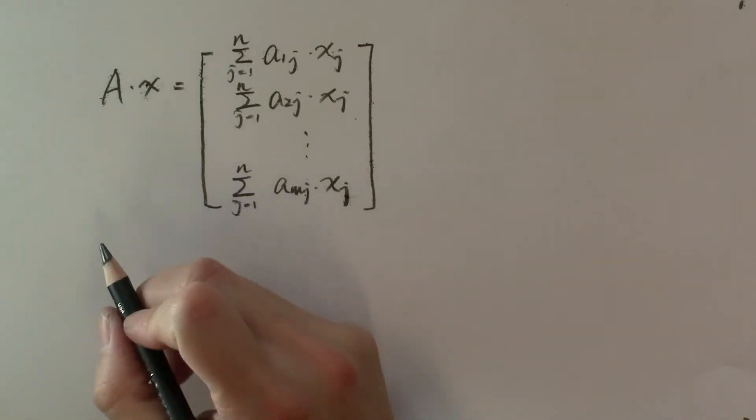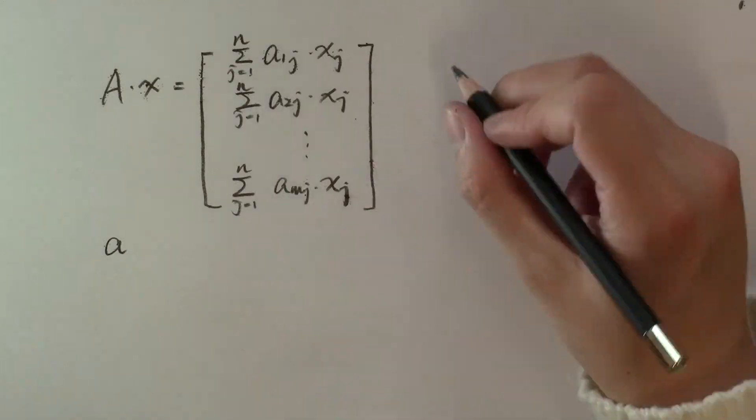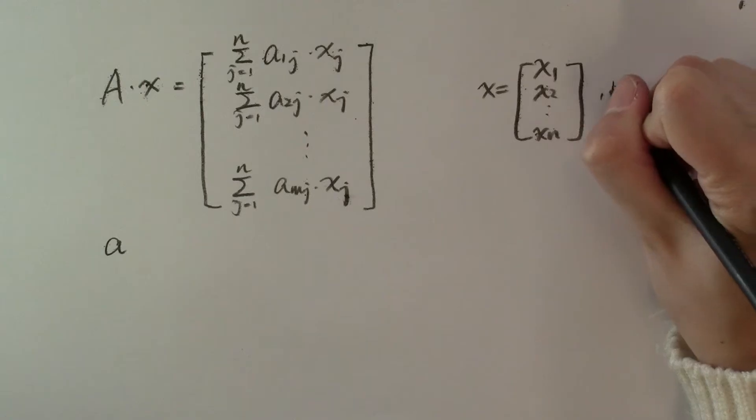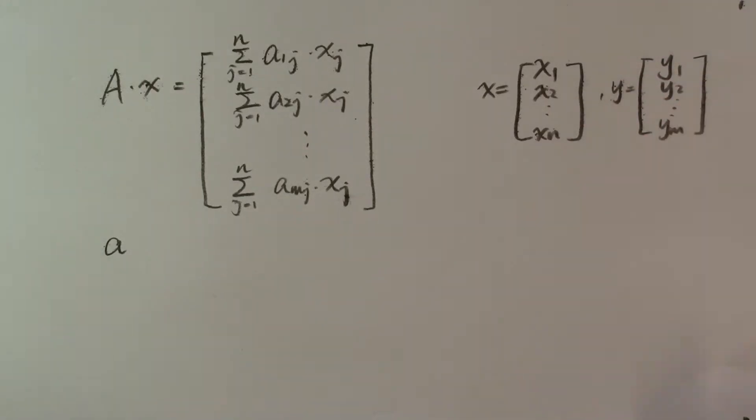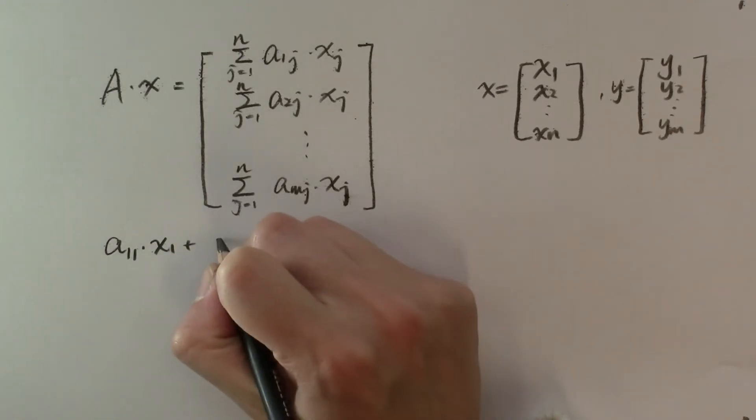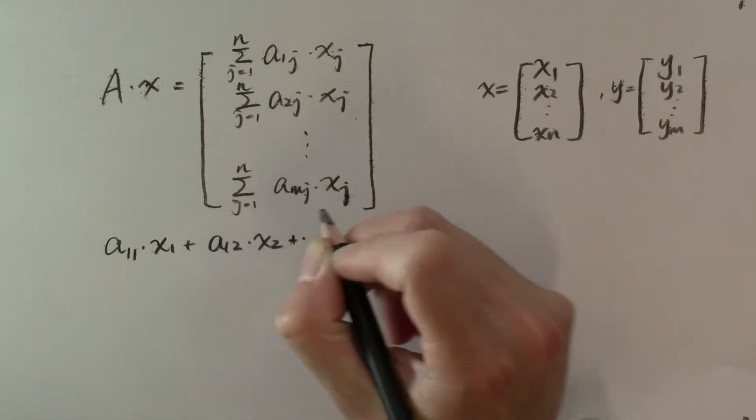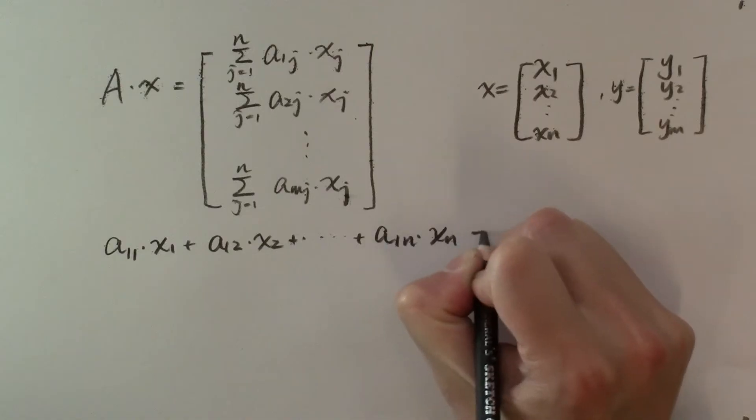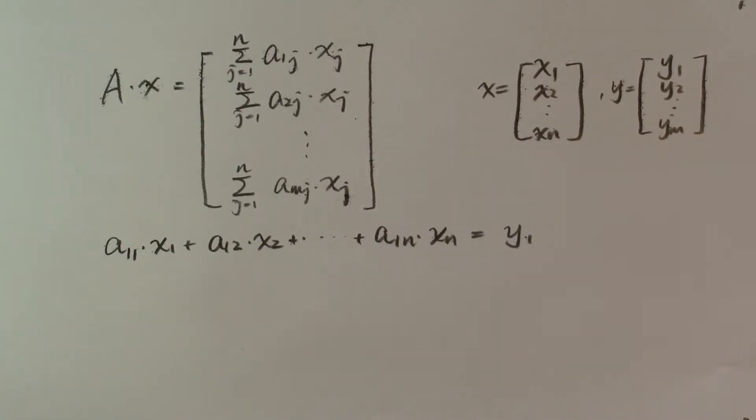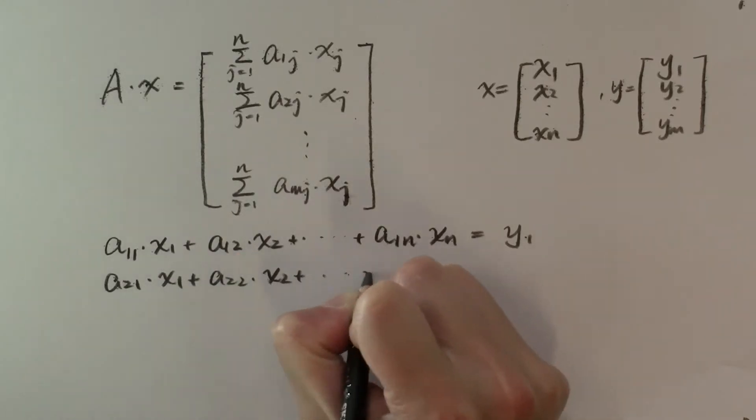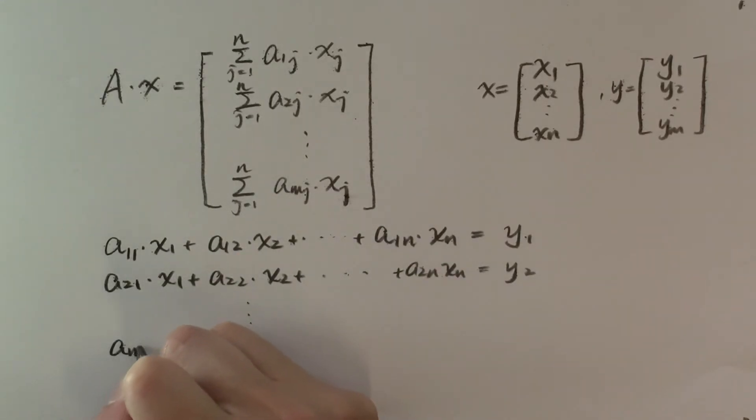And if we write out each element of y explicitly, then we have the following correspondence between the vector x and vector y. That is a sub 1 1 multiplying x sub 1 plus a sub 1 2 multiplying x sub 2. The scalar multiplication of the first row of A and vector x equaling to the first element of y. And repeating that for each row until the last row.